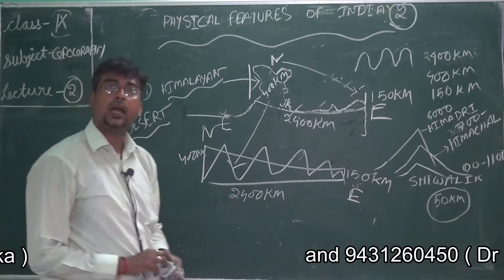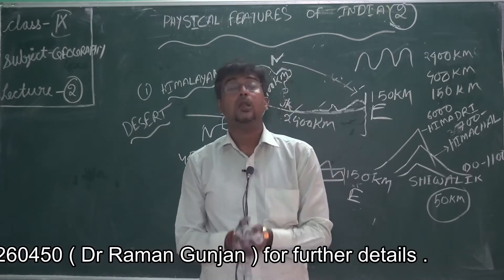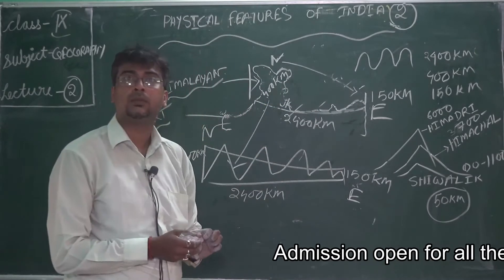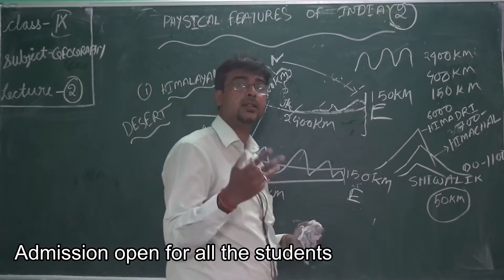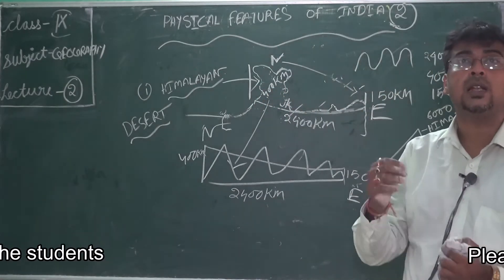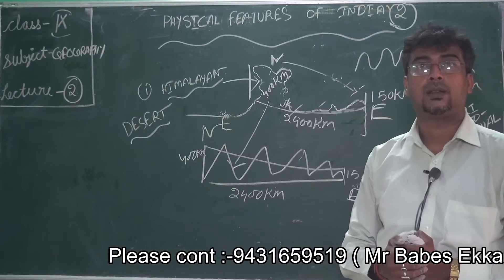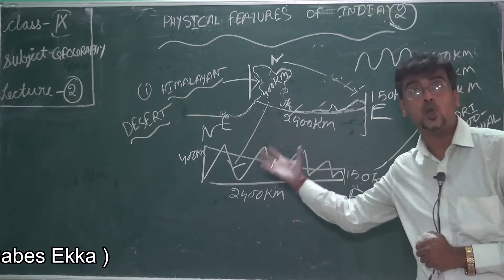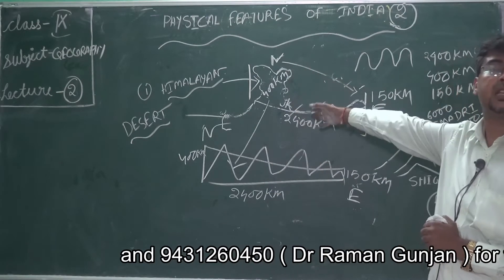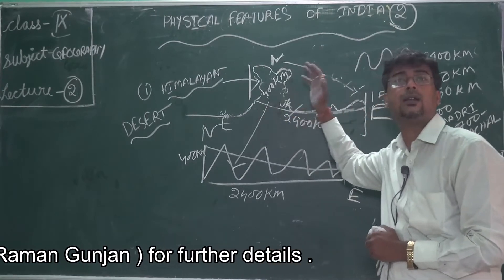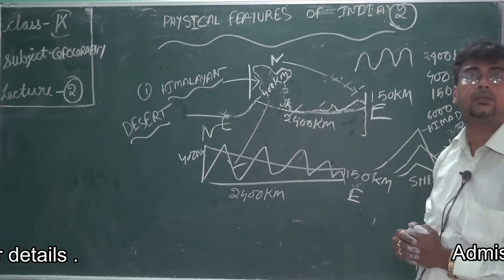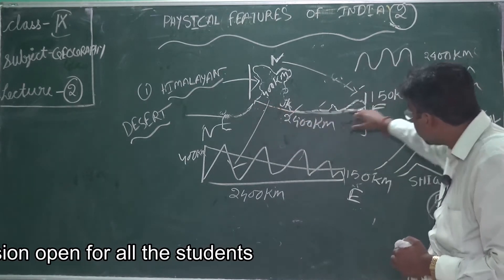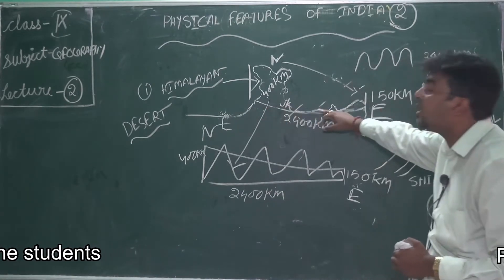The Himalayas are the largest and longest mountain range, and different types of peaks are found here. Mount Everest, which has a height of 8,848.9 meters, then Kanchenjunga, K2 — every peak, all the largest peaks, are located or situated in the Himalayas. Very important — we also find different types of ranges here.